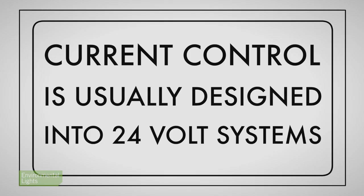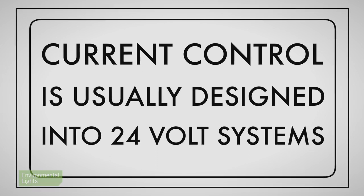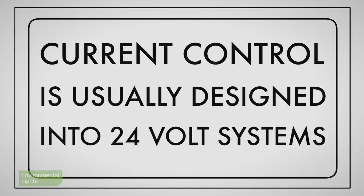Three things to remember. Number one: current control is usually designed into 24 volt, not 12 volt systems, because the limit of Class 2 wiring at 24 volts is 100 watts whereas it is only 60 watts at 12 volts. So you can more easily create larger layouts at 24 volts than 12 volts, and those larger layouts are exactly where the current control approach helps the most.